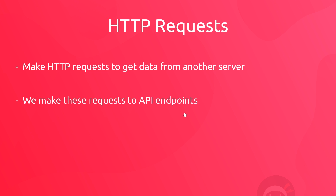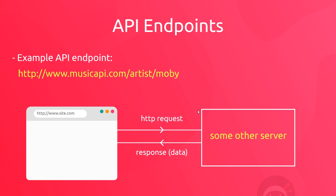When we make those requests, we can make them to what's known as an API endpoint — these are just URLs that a particular API or server exposes to us so that we can get data from them. For example, imagine we had a song library API like Spotify or SoundCloud. It might have an endpoint which looks something like this, and making a request to that endpoint would return us a list of songs. There are many different APIs we can use: Twitter, YouTube, Instagram, Spotify, and loads more, and each API has its own set of endpoints that we make requests to for data.